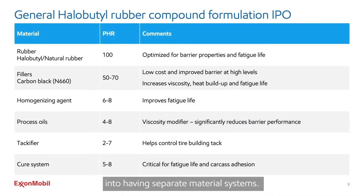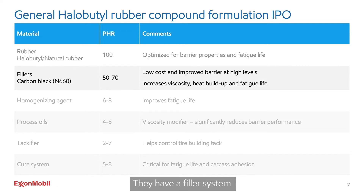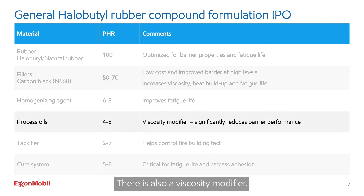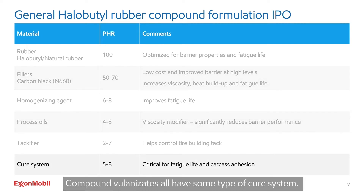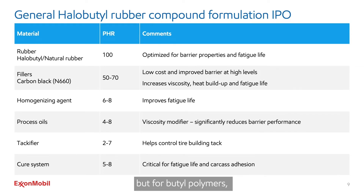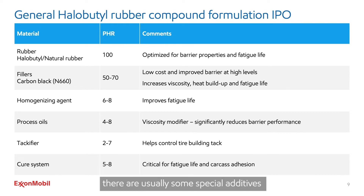Compounds can be categorized into having separate material systems. They have a polymer system. For tire inner liner, a 100% halobutyl polymer is the optimal material for barrier performance. They have a filler system — here, carbon black is added, optimized for hardness, flexibility, and processing. There is also a viscosity modifier, usually a medium weight oil. Compound vulcanizates all have some type of cure system. It is also common to have a protectant system, but for butyl polymers, this is usually not needed because of its low unsaturation level. Additionally, there are usually some special additives for specific application needs.